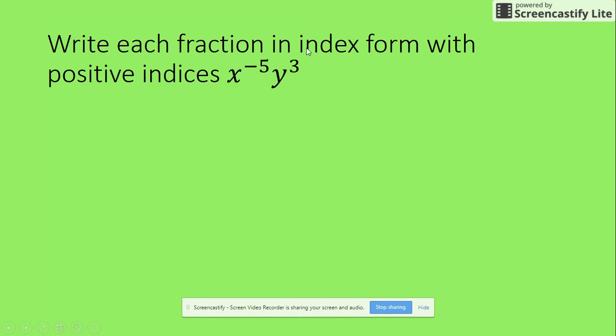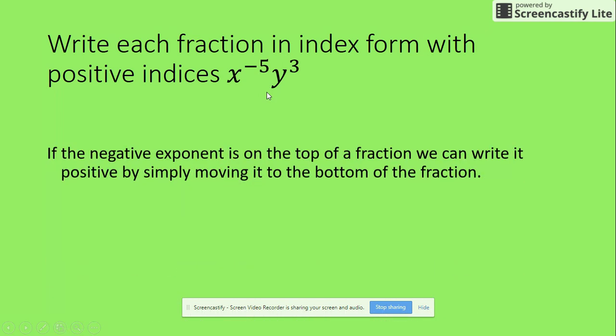Look at this one. Write each fraction in index form with positive indices. So we've got x with negative 5 and then y with 3. Now we don't have this in a fraction, but we can put it into one. So if we want to make that positive, we've got to bring it down to the bottom and make it the denominator. We can leave this as the numerator. There's our rule.